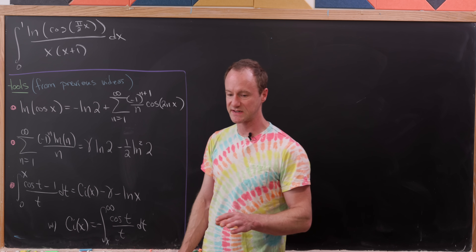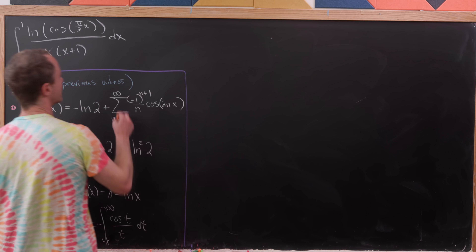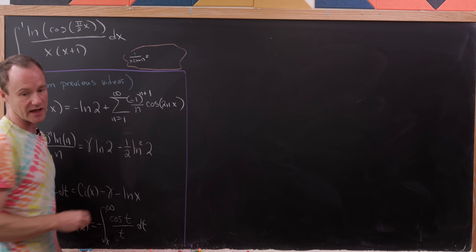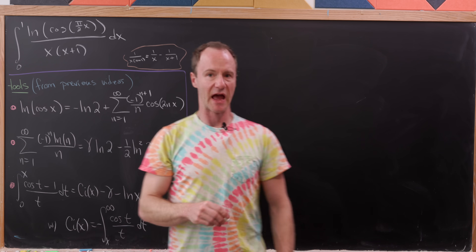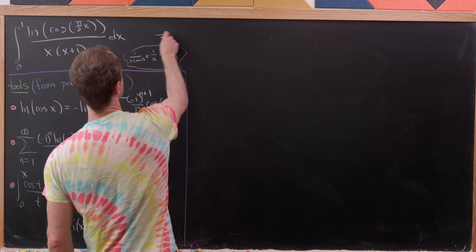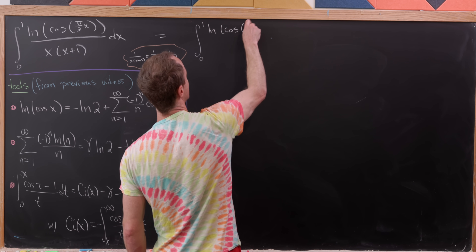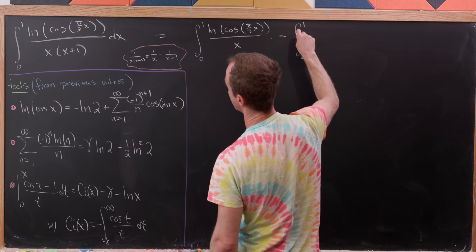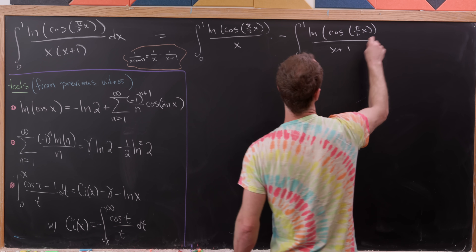Our first step is to split the integrand using partial fraction decomposition. We write 1/(x(x+1)) as 1/x minus 1/(x+1), then multiply through by the natural log term. This leaves us with the integral from 0 to 1 of ln(cos(πx/2)) over x dx, minus the integral from 0 to 1 of ln(cos(πx/2)) over (x+1) dx.